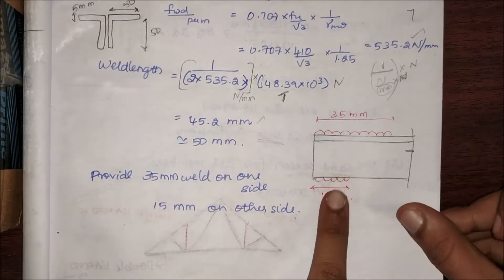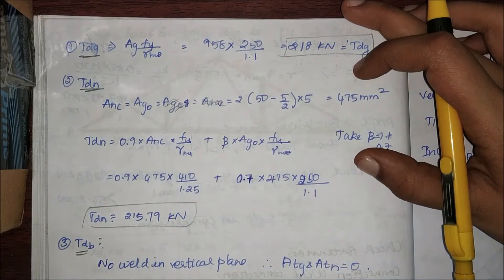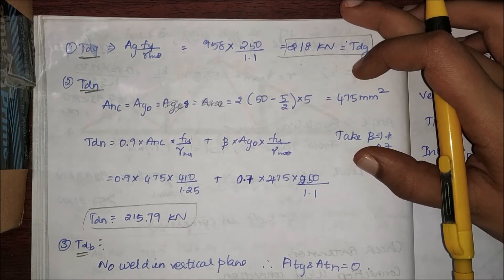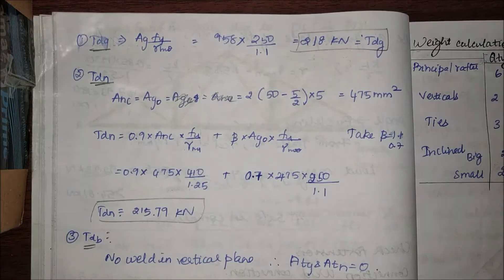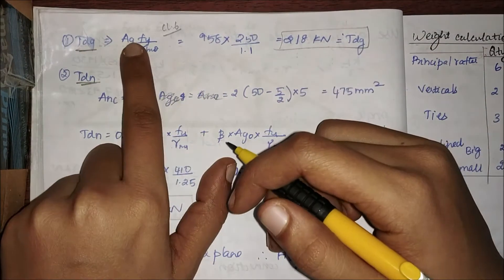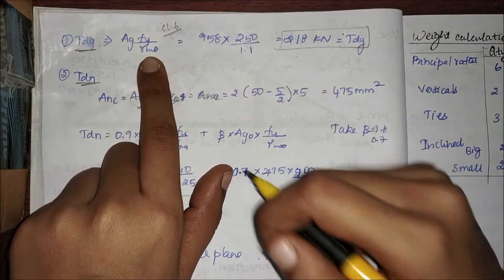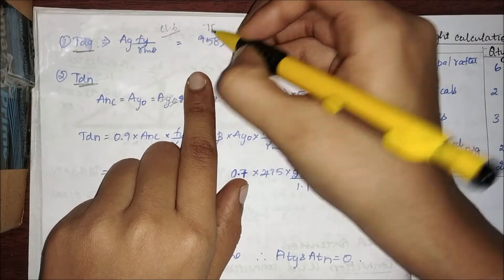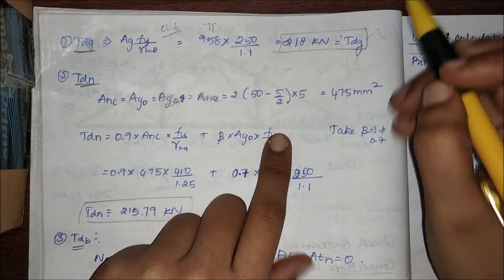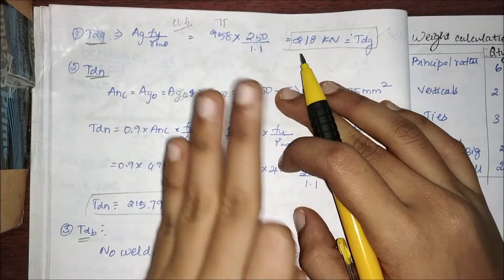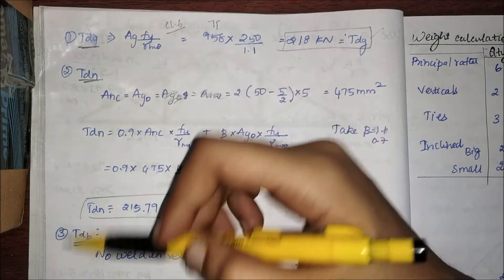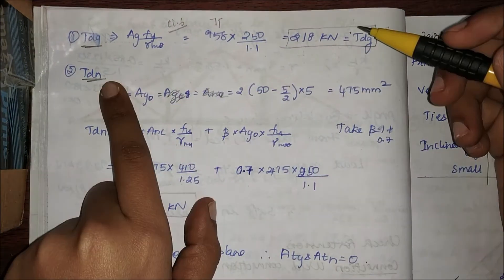Now coming to the tension calculation, I'm just going to skim this part. Tdg equals Ag*Fy/γm0. You can find all this in IS 800, clause number 6. Ag we have found from our two angle sections, Fy is 250, γm0 you'll get 218, which equals Tdg. For tension we have to find three strengths: gross, net, and bearing. The minimum of these three will be our design tensile strength.